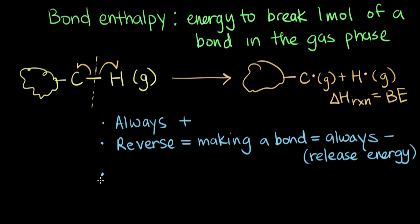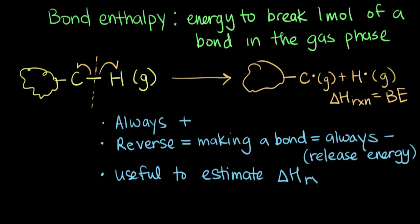The third thing to discuss about bond enthalpy is that you can use it to estimate delta H of reaction. The enthalpy of reaction is something chemists are often interested in — we want to know if it's exothermic or endothermic. There are other ways to calculate delta H of reaction, such as using Hess's law or using delta H of formation, but this is another useful method.